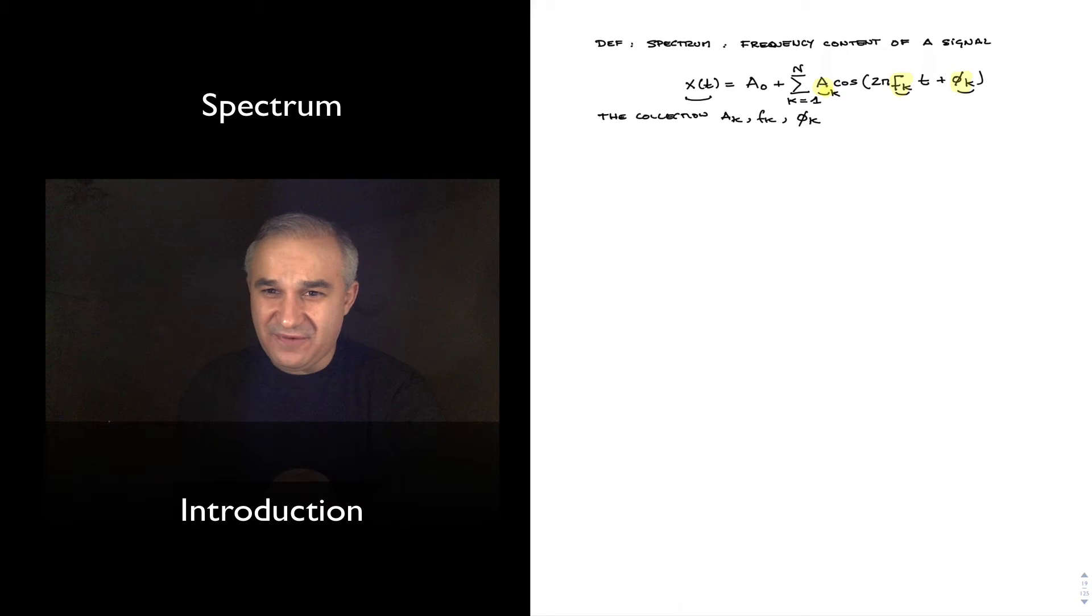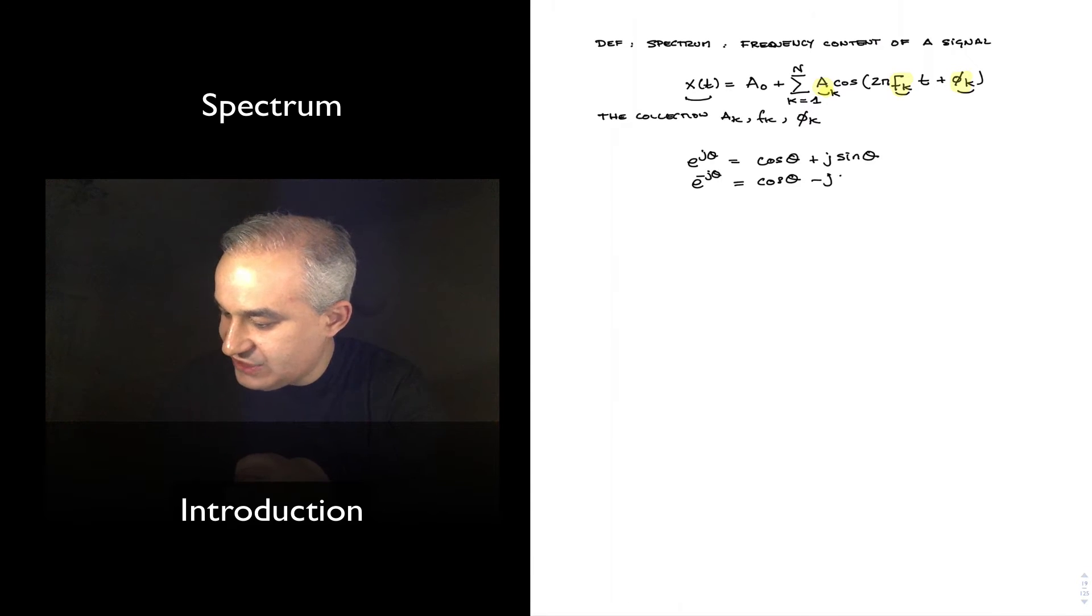Now, the mathematics gets simplified when we start using complex exponentials, and so using Euler's equation, e to the j theta equals cosine of theta plus j sine of theta, or you recall last time that we do e to the minus j theta equals cosine of theta minus j sine of theta. If we add these two equations, e to the j theta plus e to the minus j theta, we get two cosine of theta plus zero, or that the cosine of theta is equal to one-half e to the j theta plus one-half e to the minus j theta.